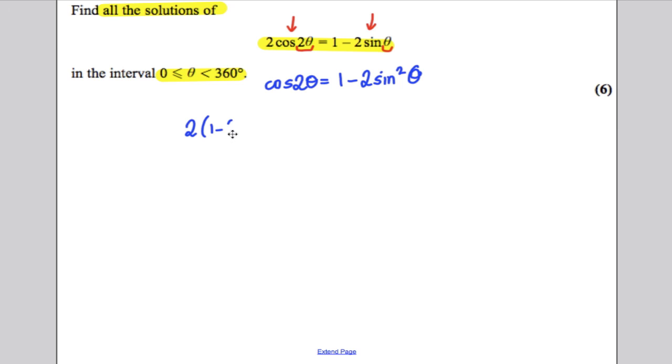2 times 1 subtract 2 sine squared of theta, single theta now, must therefore be equal to 1 subtract 2 sine of theta. Let's expand this out.